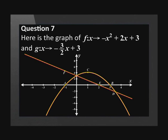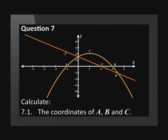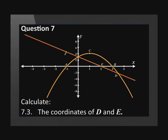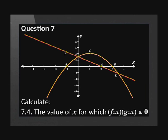Question 7. Here is the graph of f where x is mapped onto negative x squared plus 2x plus 3, and g where x is mapped onto negative 3 over 2 times x plus 3. Calculate the coordinates of A, B, and C. The length of FA, the coordinates of D and E, and the value of x for which graph f times graph g is less than or equal to 0.